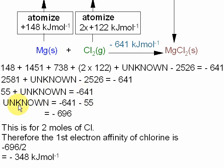Then I've moved the 55 to the other side, subtracting 55 from both sides, which gives the unknown as -696. Now this is for 2 moles of Cl, because in magnesium chloride there are 2 chlorines, so the first electron affinity of chlorine is that value divided by 2, which is -348 kJ/mol.